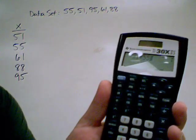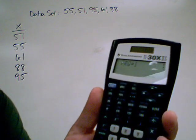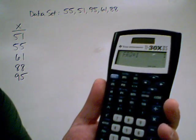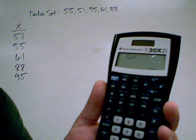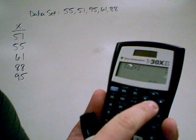We're going to type in 55. And hit the down arrow. And it will take us to something that says FRQ. Stands for frequency. Since we only have one of those, we'll keep it at 1. X2 will be 51. Have one of those as well.